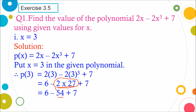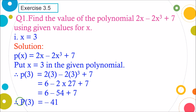Now we simplify further. We get p(3) equals minus 41. How? Because 6 minus 54 gives us minus 48, and minus 48 plus 7 is minus 41. So the value of this polynomial is minus 41 when x is 3.